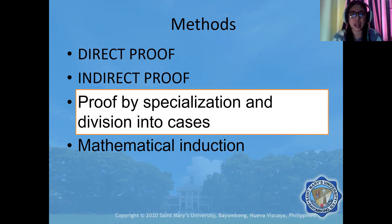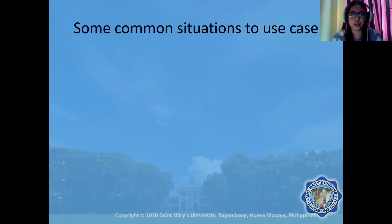When do we use this type of proof? We use this with some common situations. As much as possible, we must exhaust all possibilities of the value of our object x.